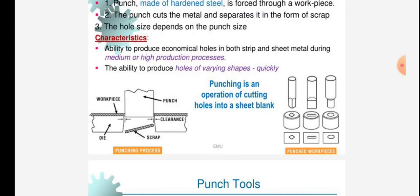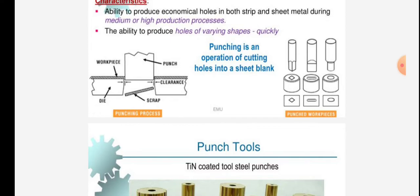Punching is an operation of cutting holes into sheet blanks. The workpiece is given in the figure: die is given, punch is given, and clearance is also given. The scrap is moved down. Punch workpieces are given in the figure.